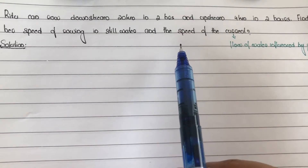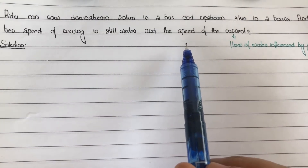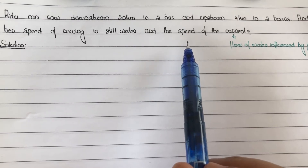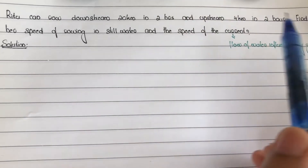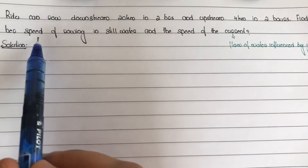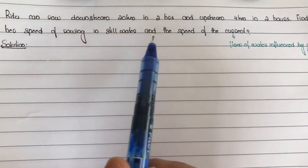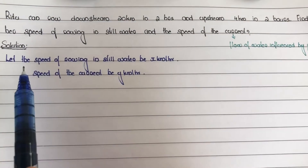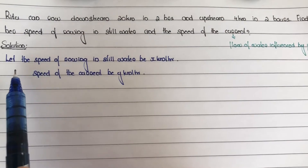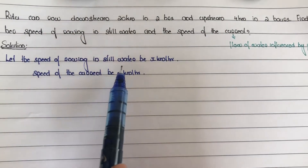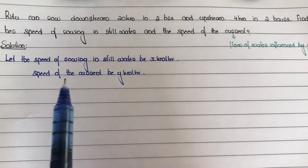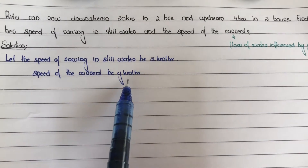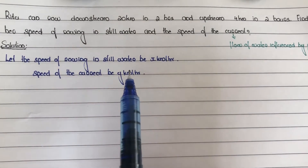First step: we need to find what is asked, so we assume variables. Let the speed of rowing in still water be x km per hour and speed of the current be y km per hour.